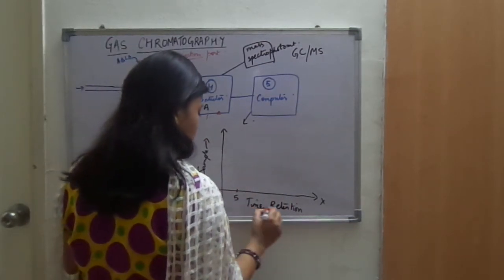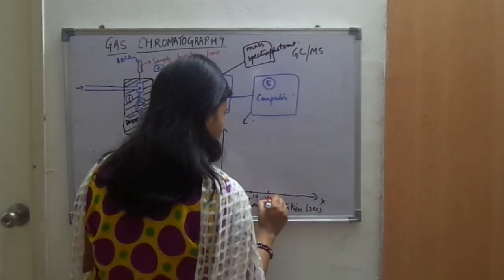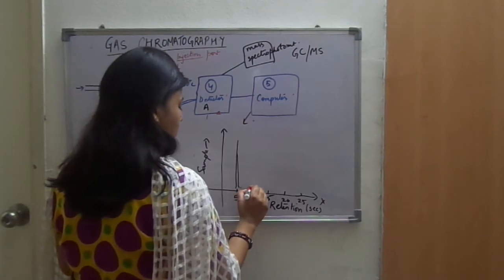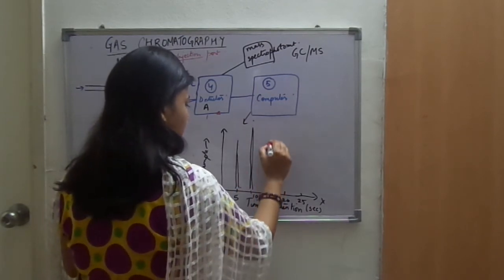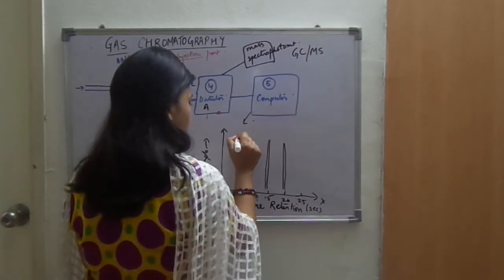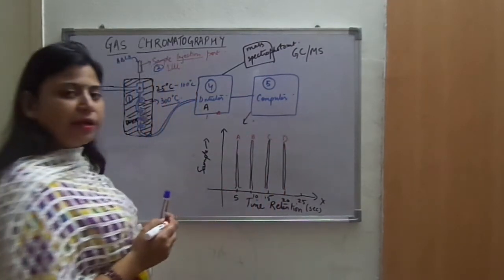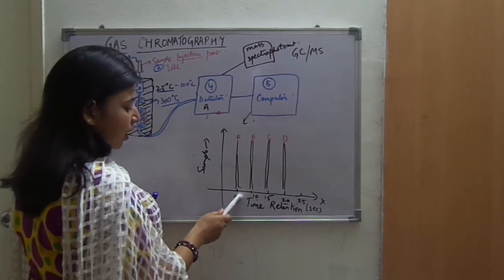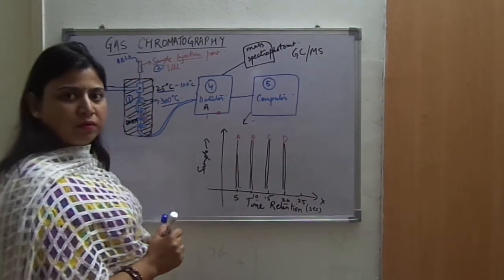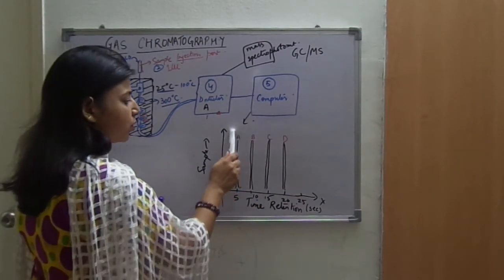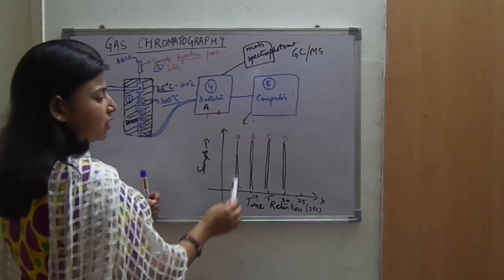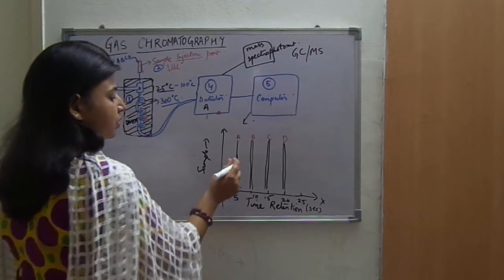Suppose this axis shows 5 seconds, 10 seconds, 15 seconds, 20 seconds, 25 seconds. After 5 seconds you get a peak of A, after 10 seconds a peak of B, then peaks of C and D at later times. A has the lowest boiling point, highest vapor pressure, and comes out first. The computer gives you this kind of graph. This is your qualitative assessment — from a standard graph you can determine what component comes out of the column at 5 seconds, 10 seconds, and so on.